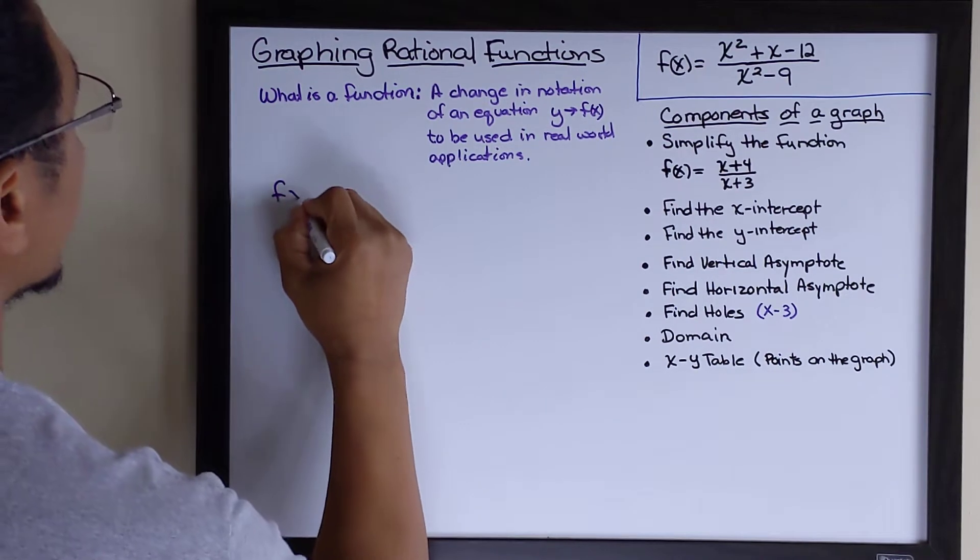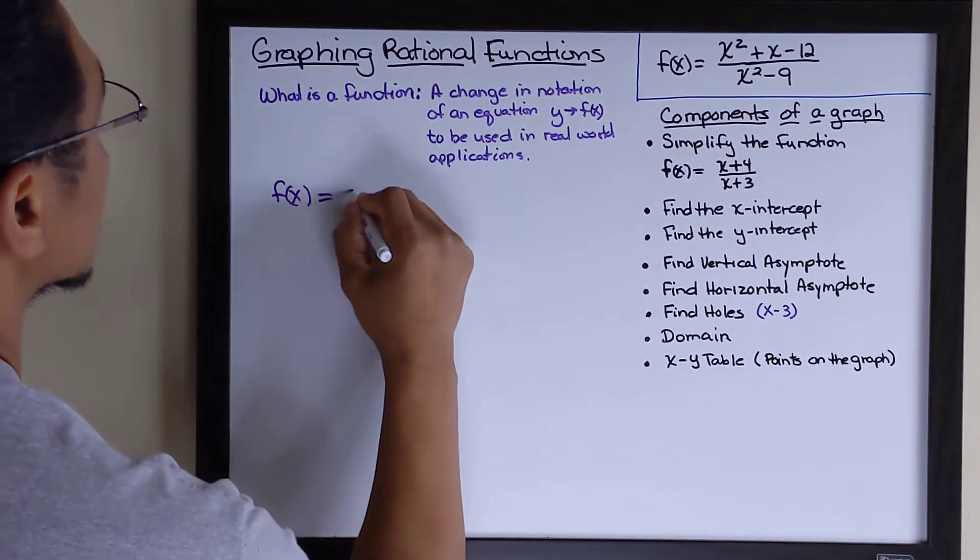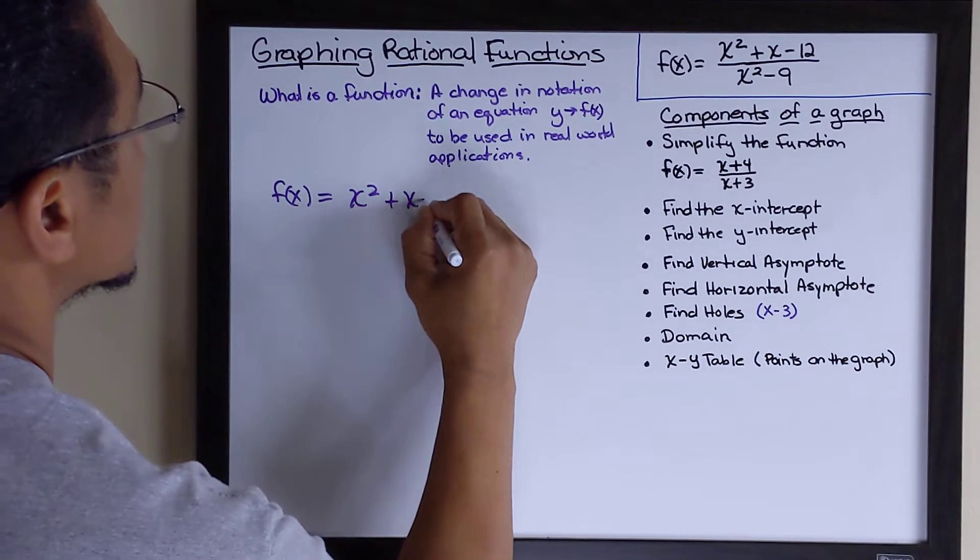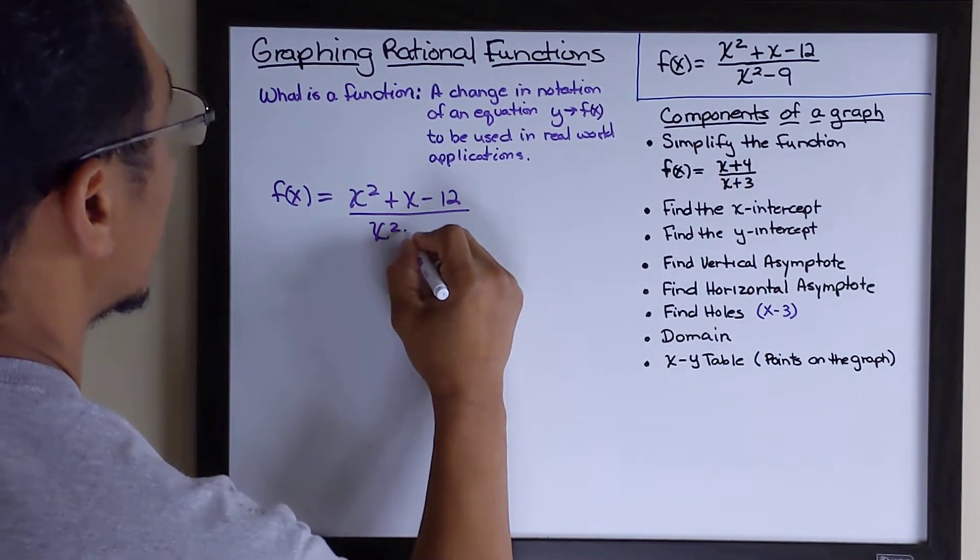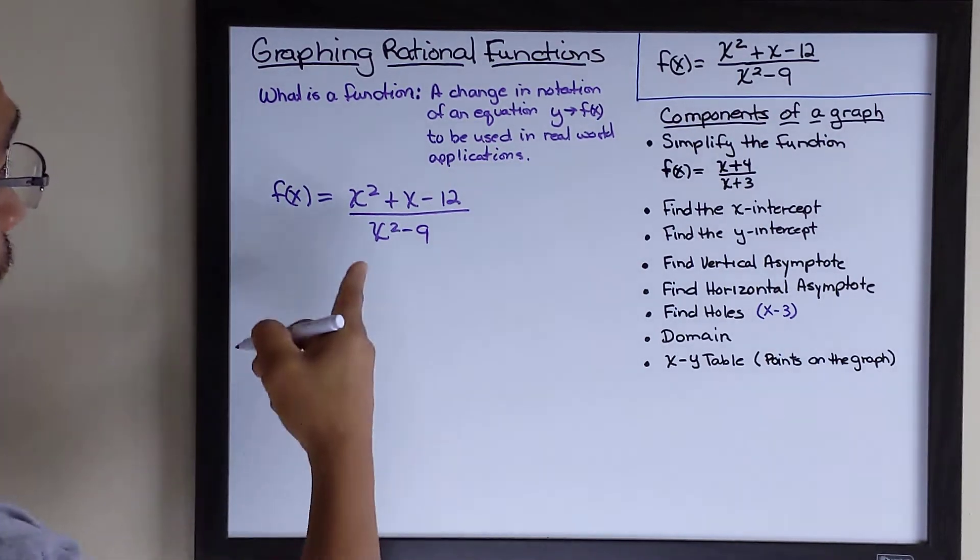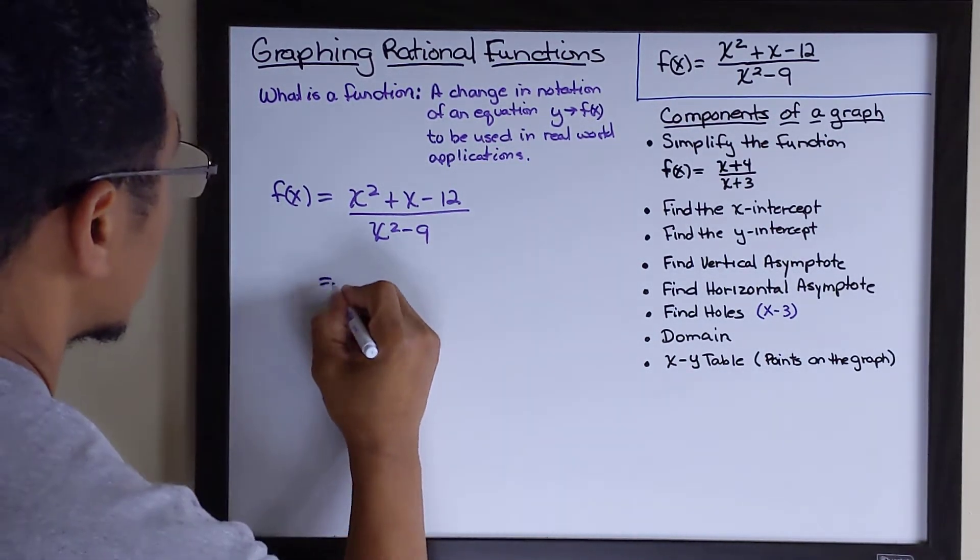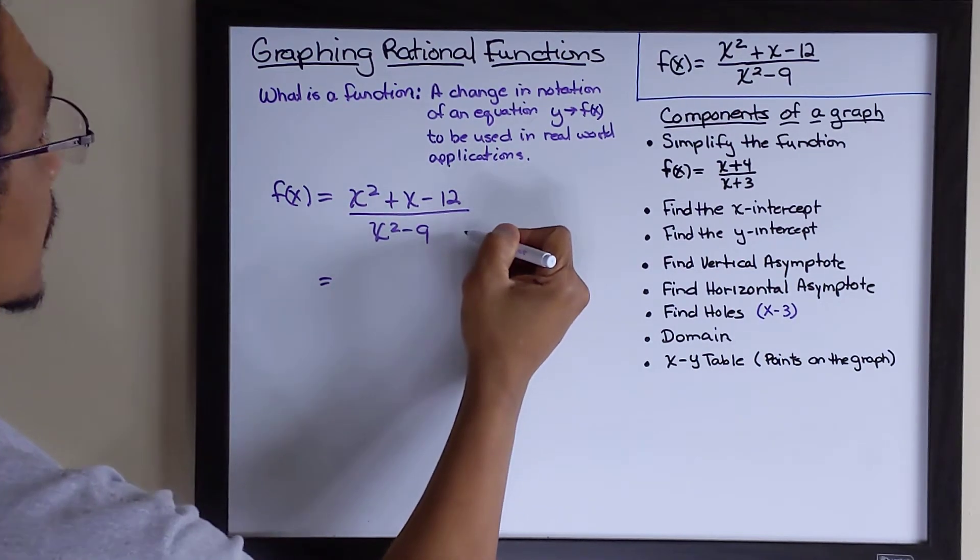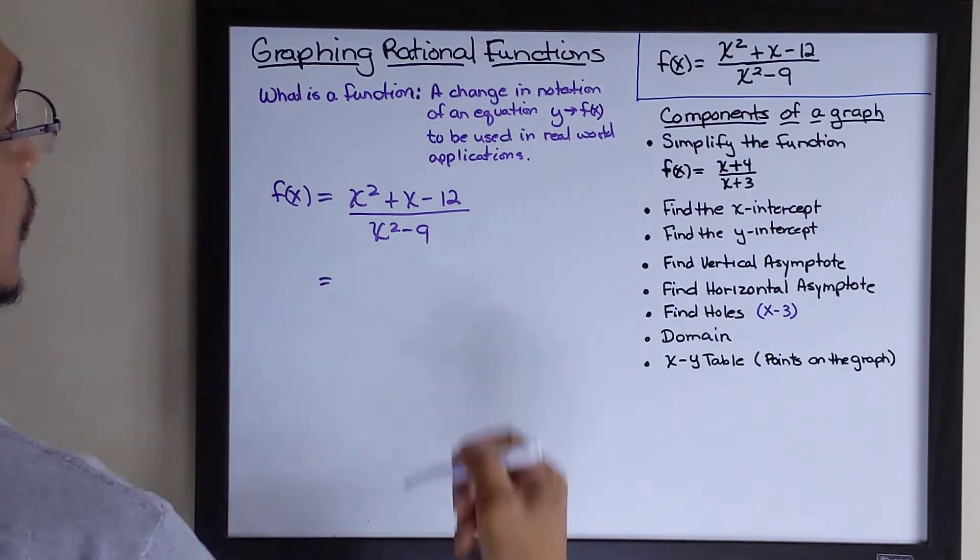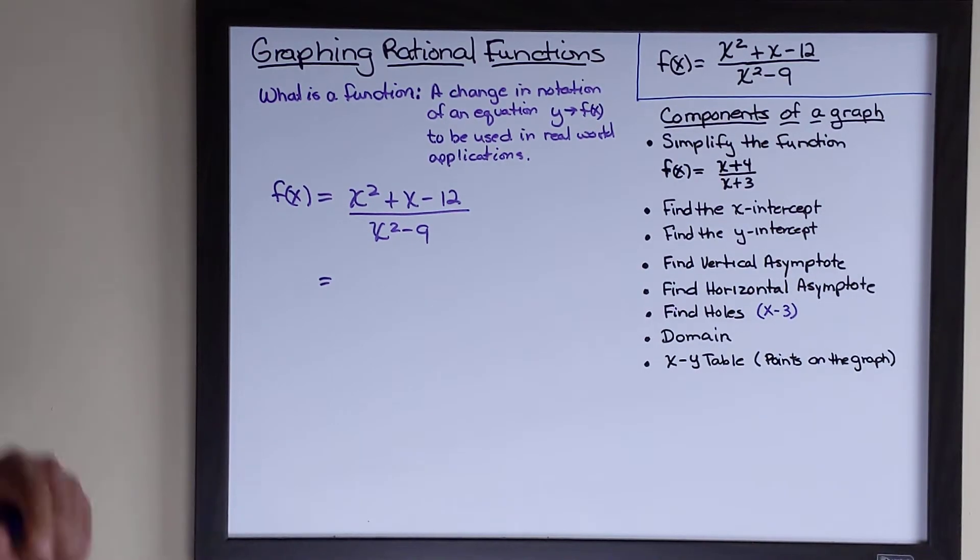f of x is equal to x squared plus x minus 12 all over x squared minus 9. Okay. To simplify this function, all we want to do is factor the numerator and factor the denominator, and then cancel any like terms between the numerator and the denominator.